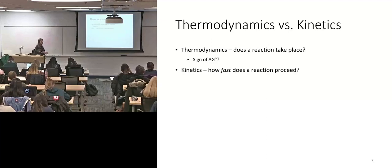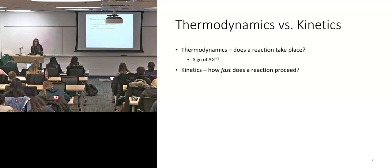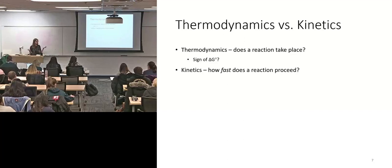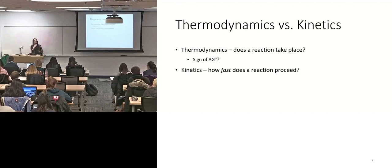Kinetics now brings into play how fast that reaction proceeds, with the reality being that it doesn't really matter if something is spontaneous if it's never actually going to happen because it would be so ridiculously slow. One of the examples on exam three was diamonds spontaneously turning into graphite, or graphite into diamond. That was at standard state temp, pressure, and all the details you were given. Technically, whichever way it is, one of them is spontaneous. It just never happens in real life because the rate at which this would occur is so slow.